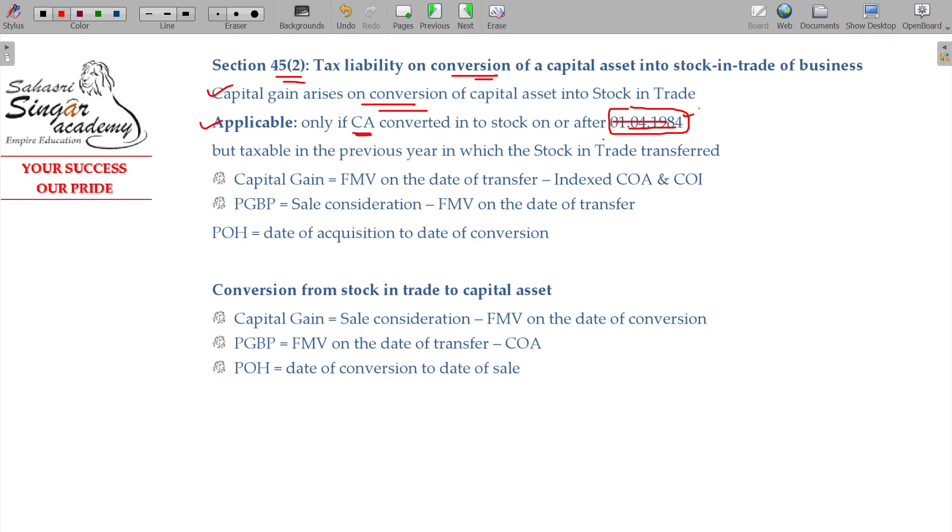But if taxable in the previous year in which such stock is traded, if all stock is transferred or partially transferred, only to that part amount will be taxable, rest will not be taxable. So capital gain is calculated as fair market value on the date of transfer minus indexed cost of acquisition. Short-term indexation not available, improvement element subtracted. PGBP is calculated as sale consideration minus fair market value on the conversion date. So the date of acquisition to the date of conversion will be taken for holding period.